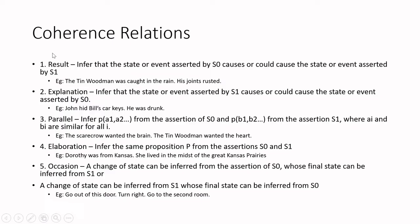The first coherence relation is result — one sentence is the result of the other. For example: 'The tin woodman was caught in the rain. His joints rusted.' As a result of being caught in the rain, his joints rusted, so the second sentence is the result of the first. Formally, we infer that the state or event asserted by S0 causes the event asserted by S1. That is the result relationship.